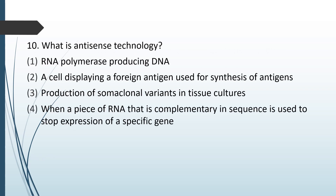What is antisense technology? Options: RNA polymerase producing DNA; a cell displaying foreign antigen used for synthesis of antigen; production of somaclonal variants in tissue culture; when a piece of RNA that is complementary in sequence is used to stop expression of a specific gene. The correct answer is option 4.